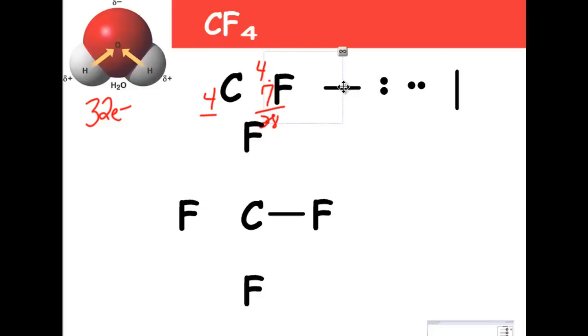And then the next rule is to connect all of those guys with a single bond. Now remember, a single bond represents two electrons. So if we tally up the electrons, we've got 2, 2, 2, and 2—2, 4, 6, 8. So 32 minus 8 leaves us with 24 electrons.